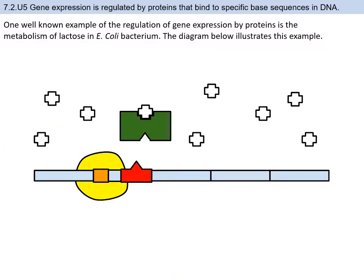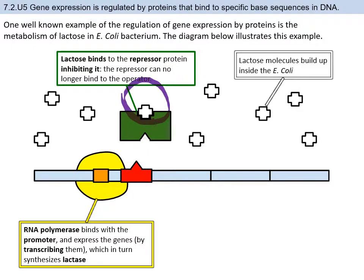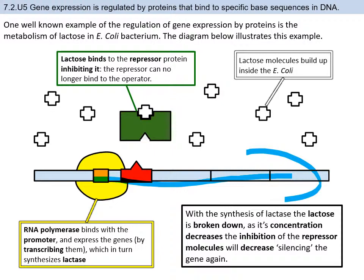When lactose is present at a relatively high concentration, it can get into the cell through the membrane. Some of that lactose might bind to the active site of the repressor protein, causing it to change shape and release from the DNA. When the repressor protein releases, RNA polymerase is free to move through all of the genes and express the three sections of DNA that create the lactase enzyme, a transport protein to move lactose into the cell, and another series of molecules that help with breaking down lactose.